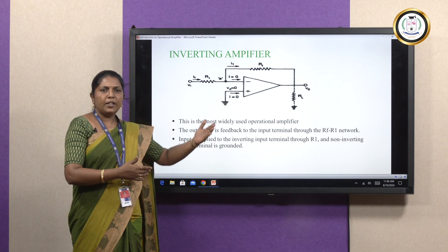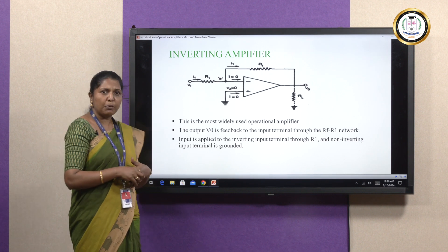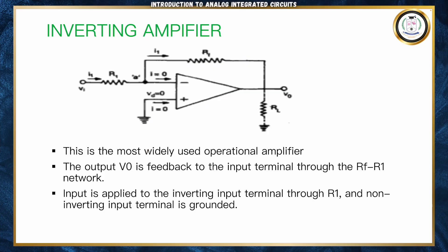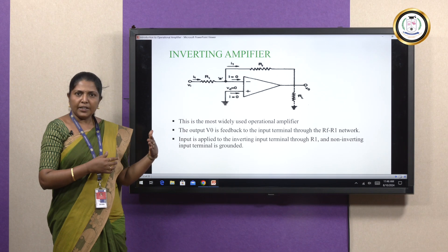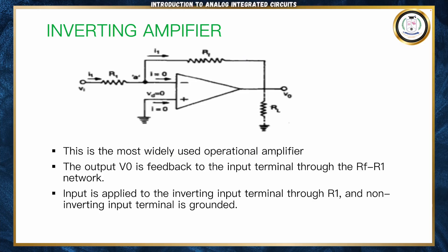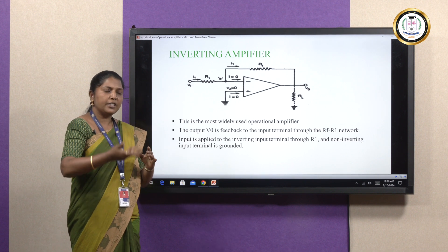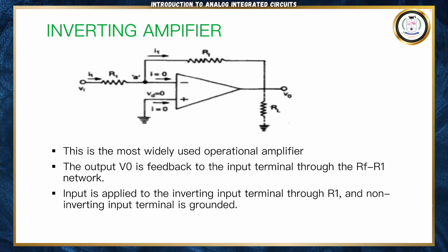Once we understand the characteristics of the operational amplifier, we can move on to its applications. Today we will discuss three important applications: inverting amplifier, non-inverting amplifier, and differential amplifier. The inverting amplifier is one of the most important and widely used operational amplifier configurations. It has two terminals — negative and positive. The negative terminal is called the inverting terminal. If you give input to the negative terminal, it is called an inverting amplifier. It amplifies the signal and inverts the phase. The input is given to the inverting terminal and a feedback is given to make it a closed loop.